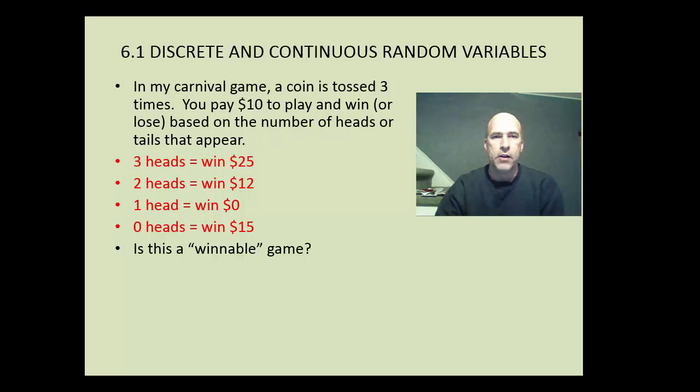So first we're going to define a variable here. We're going to let X equal the amount of money won from a $10 bet. And notice I'm using capital X here. Usually we use lowercase x for variables. But here, X stands for the entire distribution of variables. Meaning $15, $0, $12, and $25. So we use a capital X here to mark the distribution.